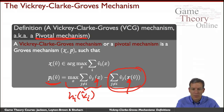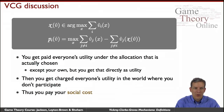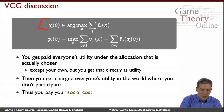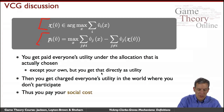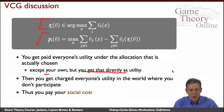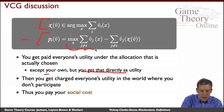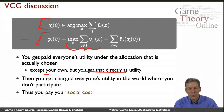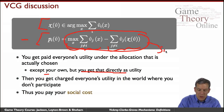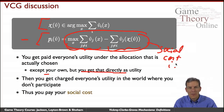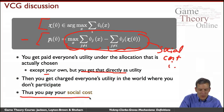What you get is everyone else's utility under the allocation actually chosen. You then get charged everyone else's utility under the counterfactual world without you. What you're charged is how much everyone else would have gotten if they didn't have to take you into account, less what they're getting in the world where they do take you into account. We can think of this as the social cost of individual I — having I present imposes some change in utility for the other individuals. Individuals are paying their social cost.